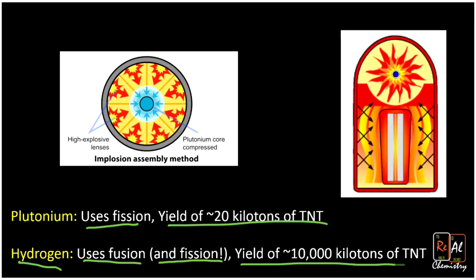And the yield can be up to 10,000 kilotons of TNT, or even higher. So a way more powerful, way more complex weapon. We developed these after World War II, and so they represent a step of increased complexity in our nuclear weapons.